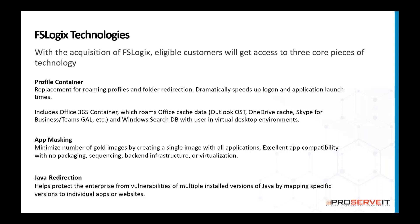A couple of other things that FSLogix allows us to do are app masking and Java redirection. App masking allows us to build virtual machines, install a number of different software products, and then use app masking to basically hide the applications that aren't relevant to a given user. In the Windows Virtual Desktop world, the preferred mechanism for applications is actually App Attach — where we have external applications that we just plug into the VMs as necessary. But for organizations who want to take a legacy gold image that might have applications for five different departments installed on it, app masking allows you to minimize the number of gold images and just leverage app masking to hide applications that aren't relevant to a given user.